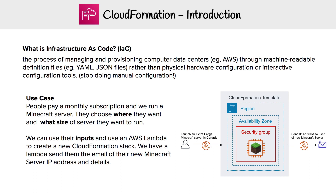That Lambda function triggers the launch of a new CloudFormation stack using our CloudFormation template, which defines how to launch that server — an EC2 instance running Minecraft, in a security group, specifying the region and size. When it's finished creating, we can monitor it using CloudWatch Events, and using the outputs from that CloudFormation stack, send the IP address of the new Minecraft server to the user so they can log in and start using their server.